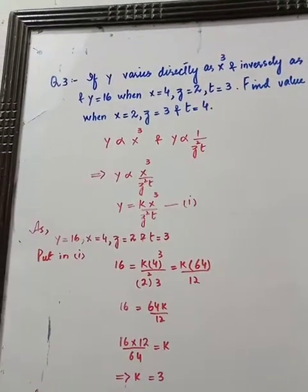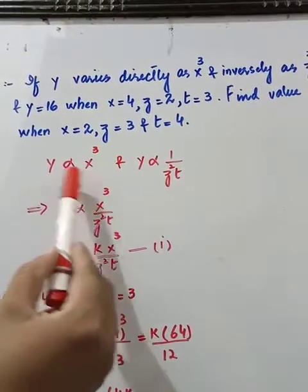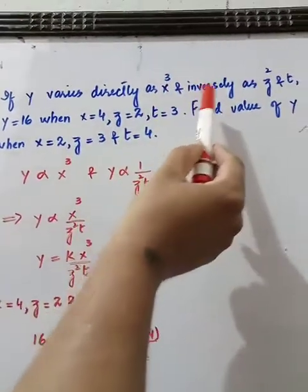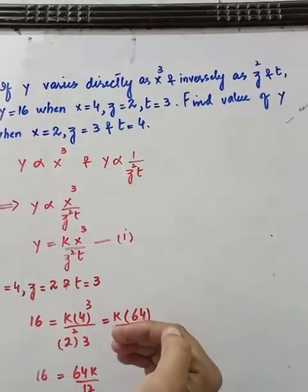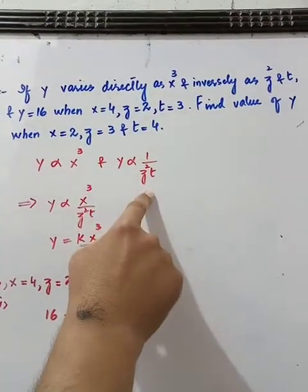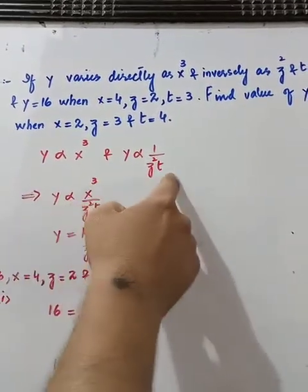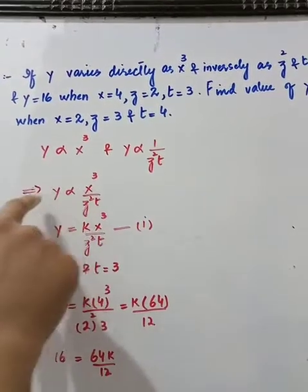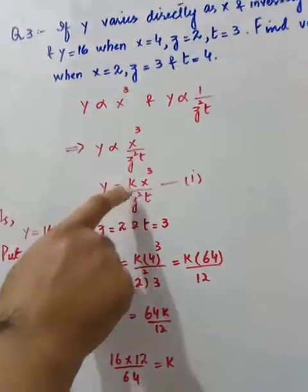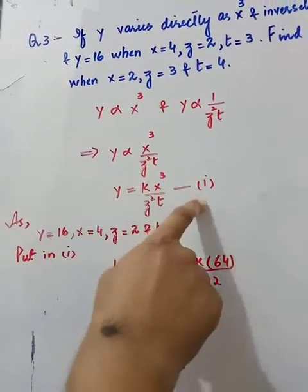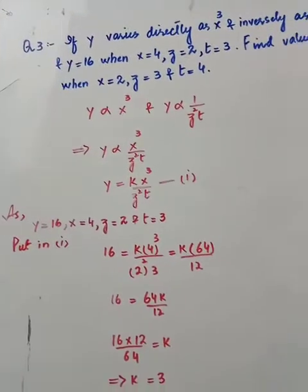First of all, you have to see that Y directly is x cubed and inversely is z squared and t. Inversely means that denominator comes in inversely. If we combine them, x cubed and z squared t, then ultimately this is the question. We have to do constant and you have to say equation number 1. Now keep these steps in your mind and you have to ask this question, it will be easy.